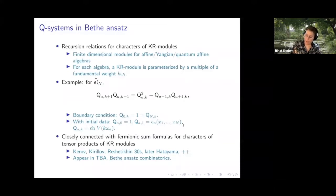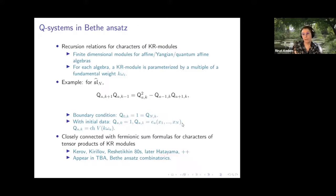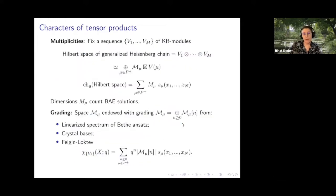The full list of Q systems was written down by Hatayama, Kuniba, and company in the early 2000s. For any affine algebra you can write a Q system — this is just the simplest one. I'll mention what they look like in a moment.